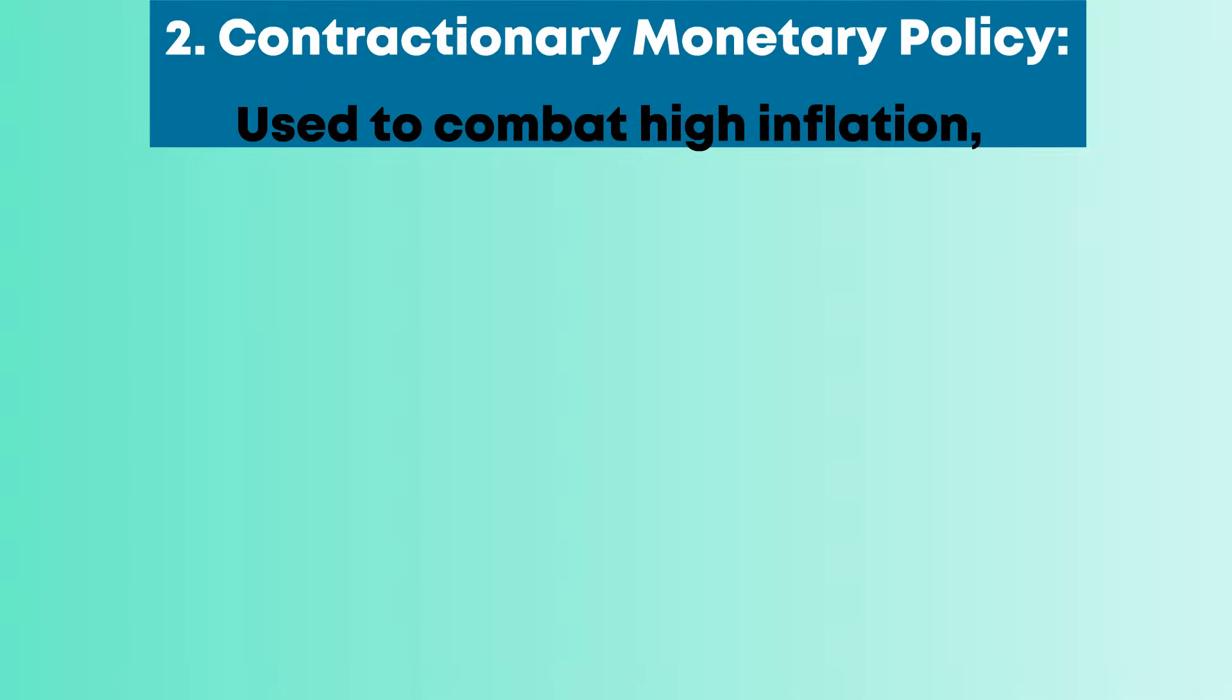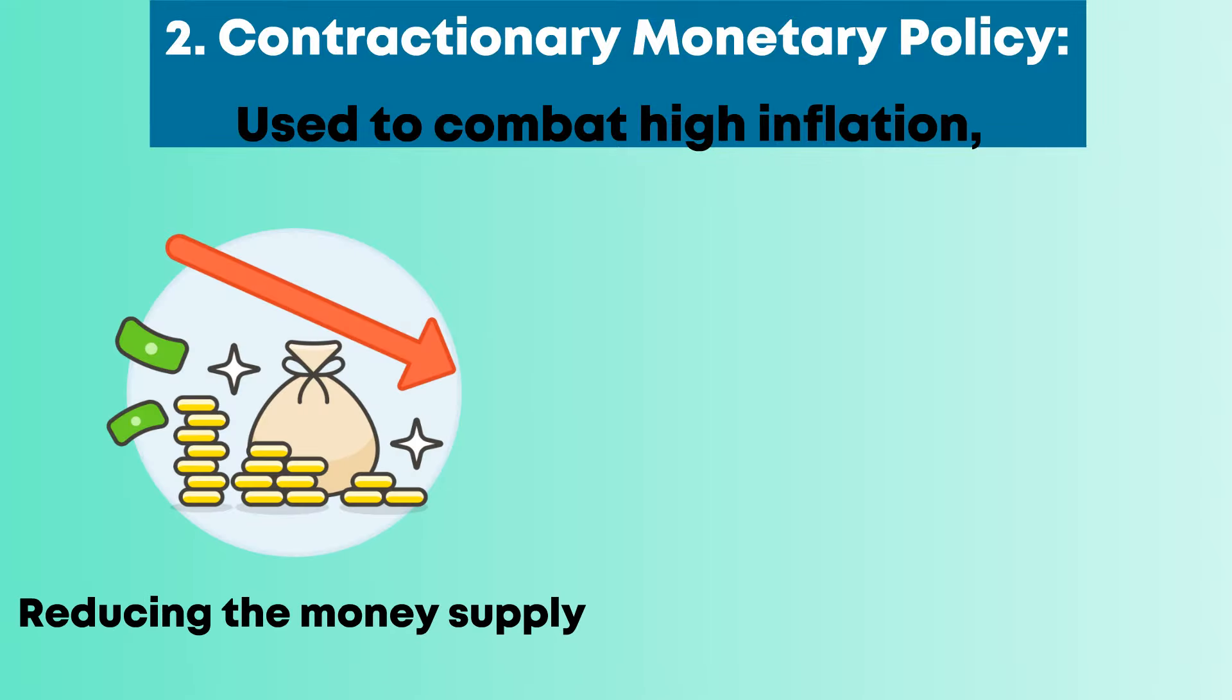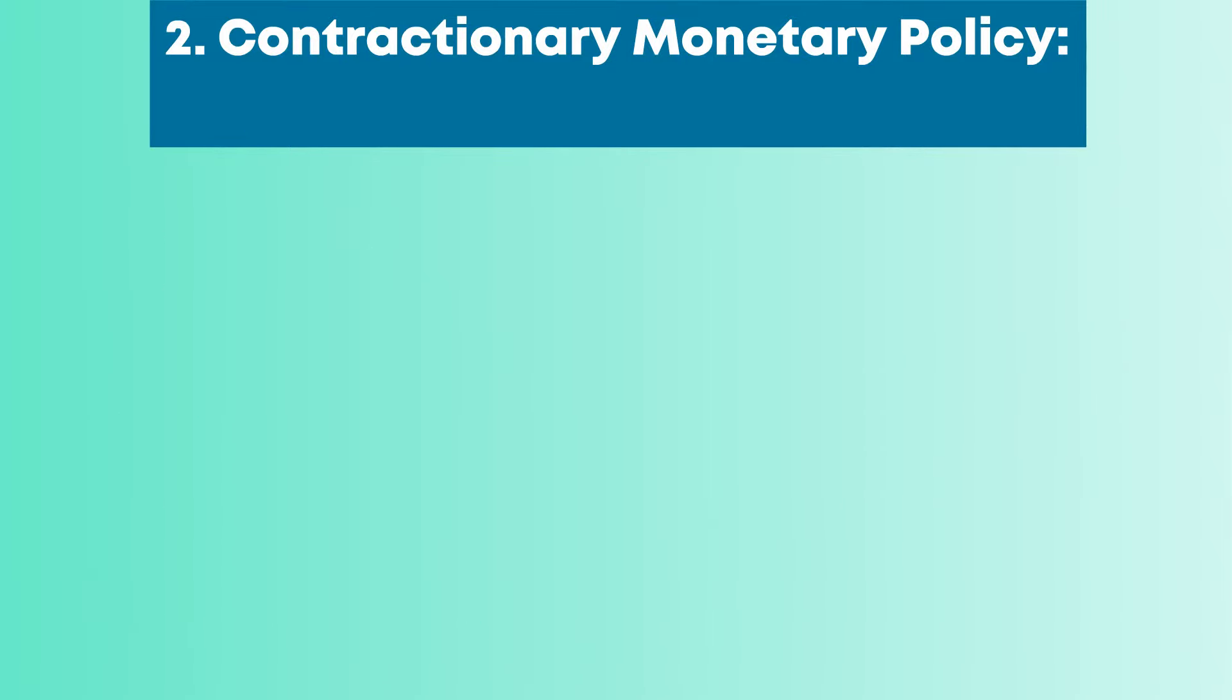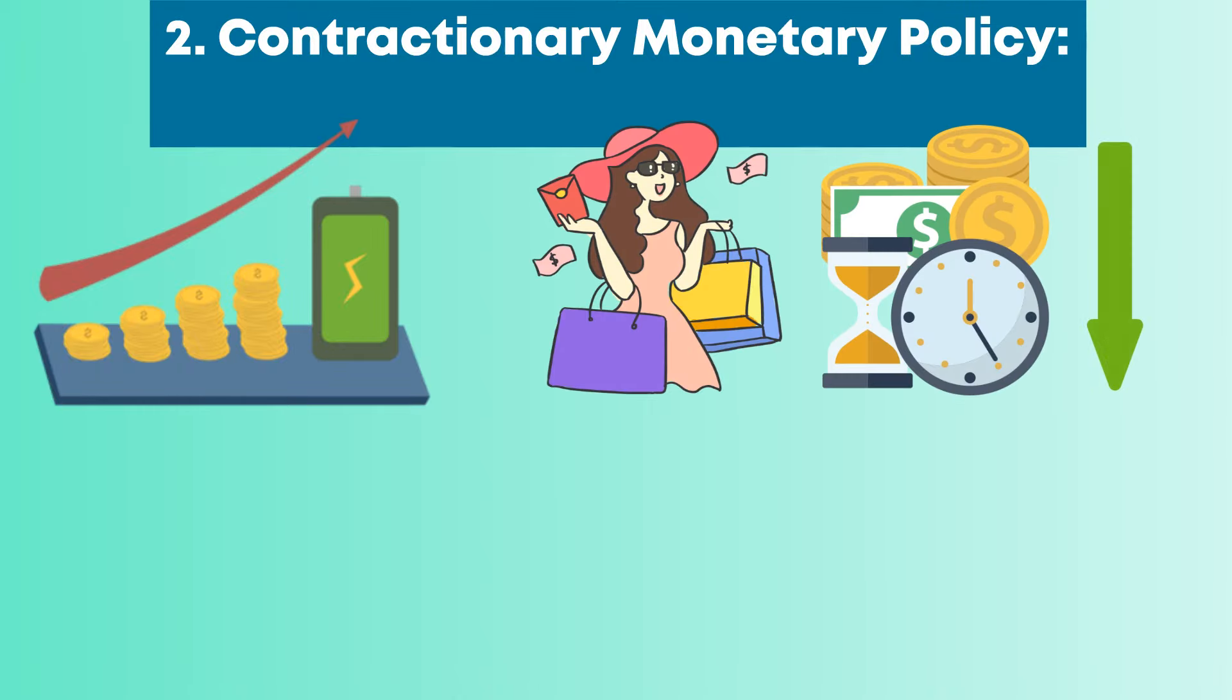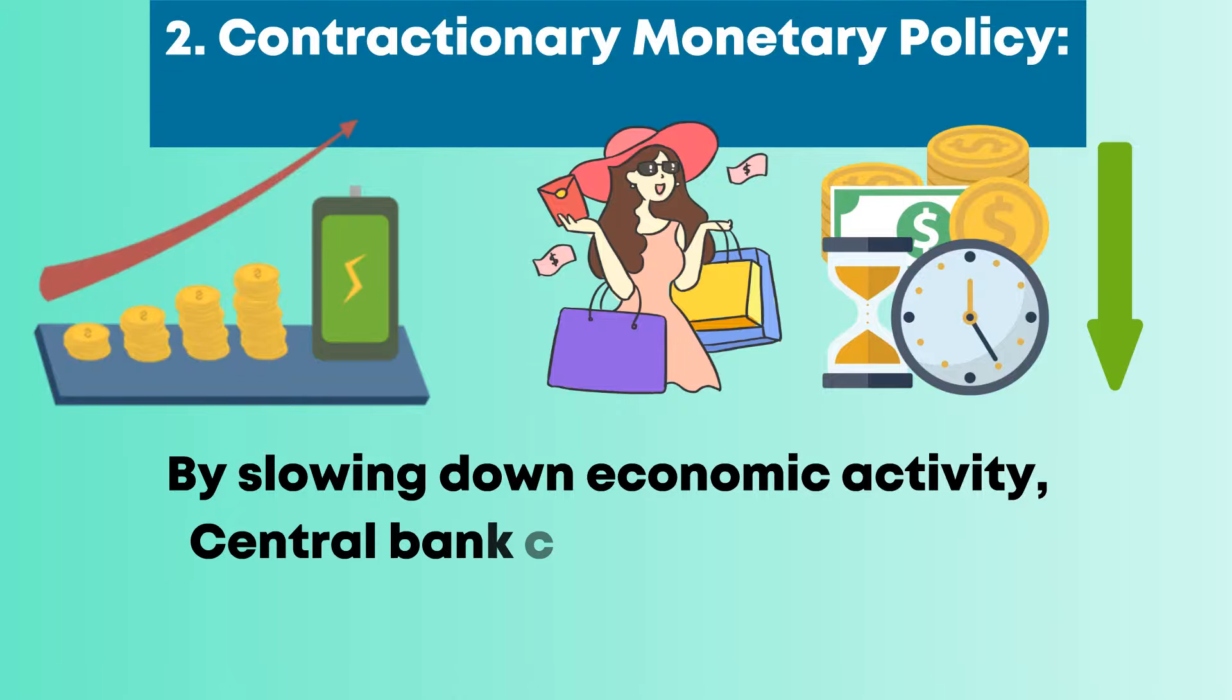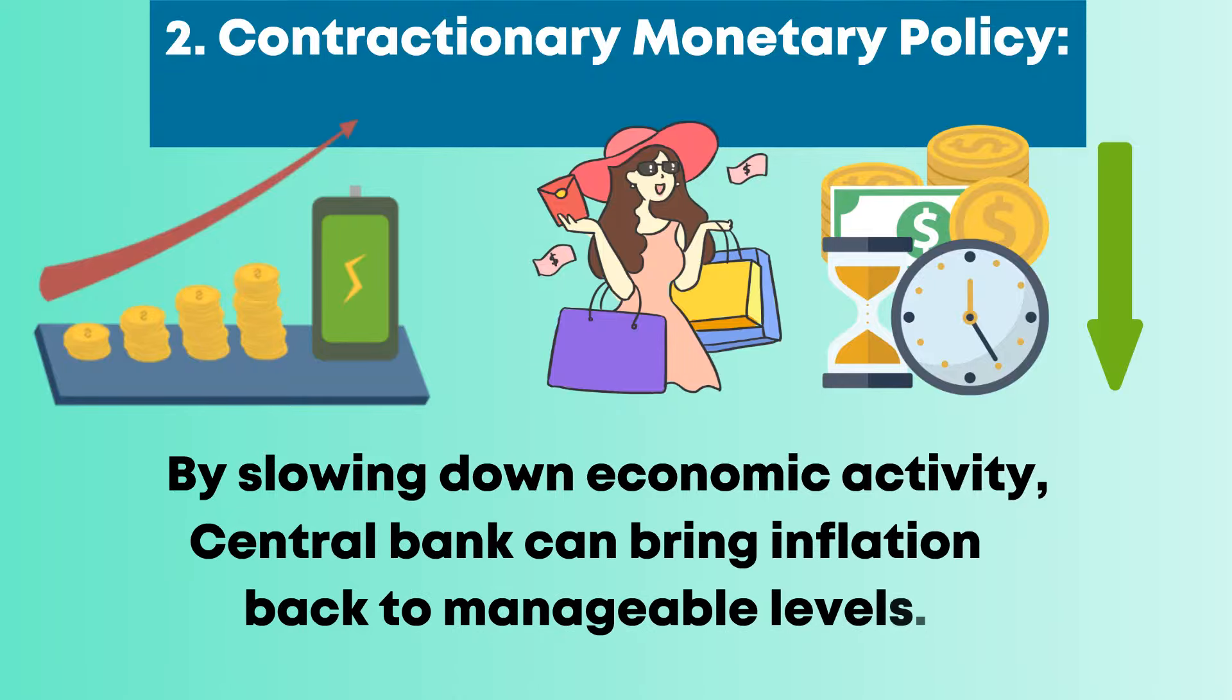Contractionary monetary policy is used to combat high inflation. It involves reducing the money supply and increasing interest rates. This makes borrowing more expensive, discouraging excessive spending and investment. By slowing down economic activity, the central bank can bring inflation back to manageable levels.